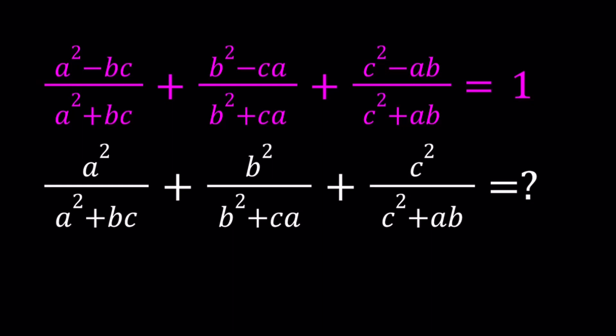Also notice that in the numerators of the second expression, you are missing some terms such as the negative bc, negative ca, and so forth. So how can I get rid of those terms that are in the numerator of the top expression and get the bottom one? That's what we're going to do.